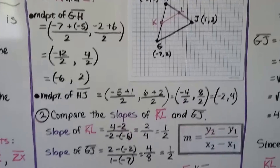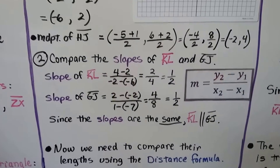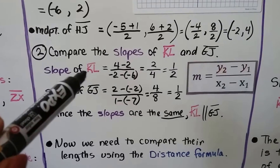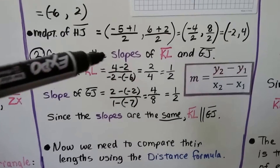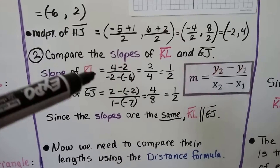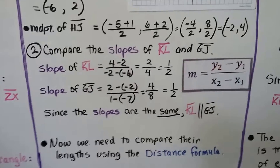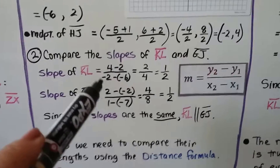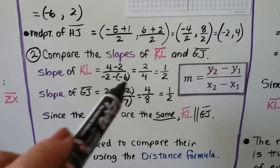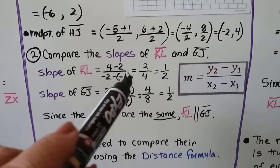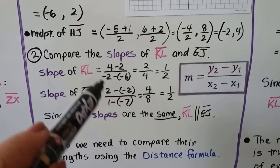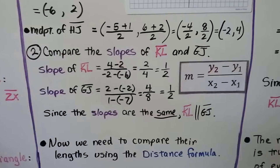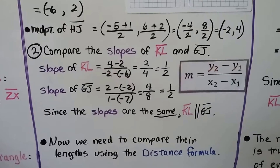Then we compare the slopes of segment KL and GJ. The slope of segment KL, using the slope formula, is 4 minus 2 over negative 2 minus negative 6. Well, 4 minus 2 is 2, and negative 2 minus negative 6 — we add the opposite — gives us negative 2 plus 6, which is positive 4.